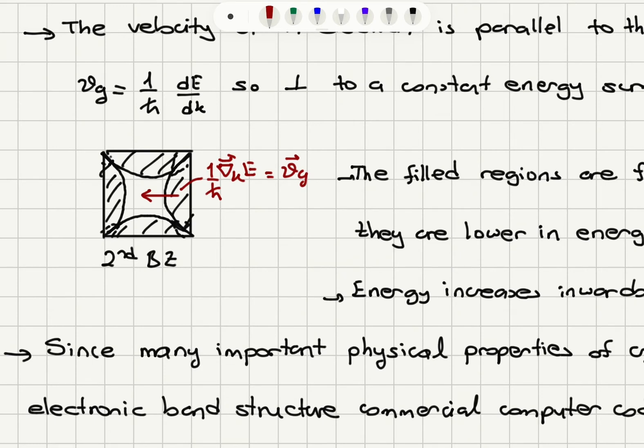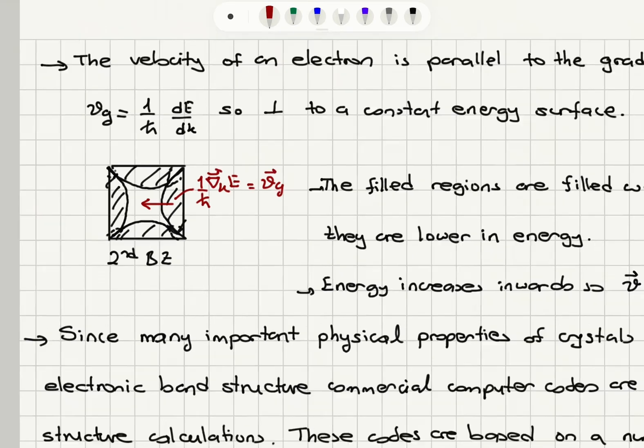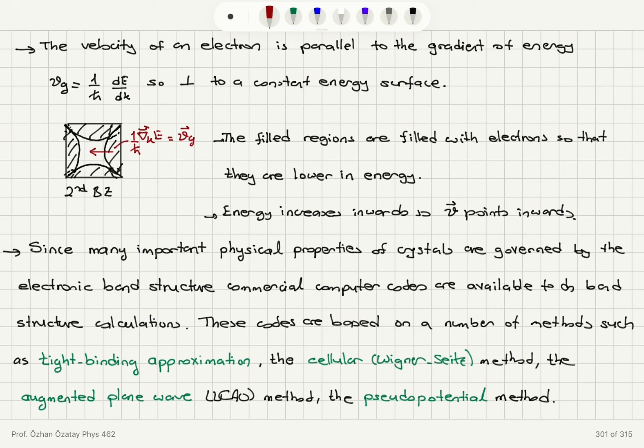So when an electron moves, you have to show it as the velocity vector pointing perpendicular to the center. The filled regions are filled with electrons and they are lower in energy. The empty regions are higher in energy. So energy increases inwards and the velocity always points inwards.